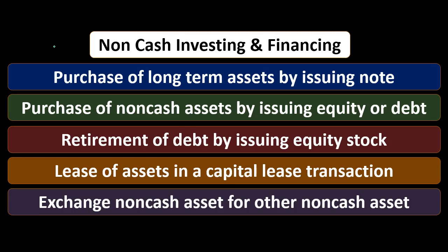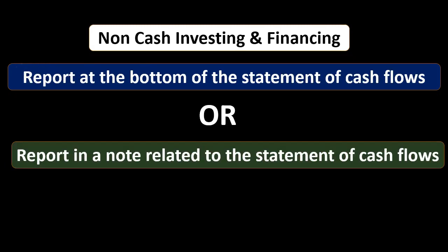We'll go through this more fully by giving an example of the purchase of long-term assets by issuing a note, an example we can then apply to the rest of these items. We're going to report non-cash items at the bottom of the Statement of Cash Flows, or report them in a note related to the Statement of Cash Flows. These are important things we want to disclose to the reader of the financial statements, either directly connected to the Statement of Cash Flows or in a note referencing the Statement of Cash Flows.